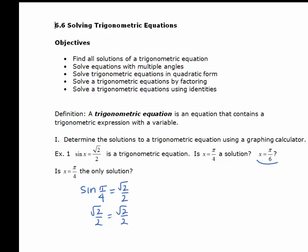The next question is: is x equals pi over 6 a solution? If we plug in sin of pi over 6, the sin of pi over 6 is one half. One half does not equal the square root of 2 over 2, so pi over 6 is not a solution. But the next question is: is x equals pi over 4 the only solution? Remember that trigonometric functions are cyclical.